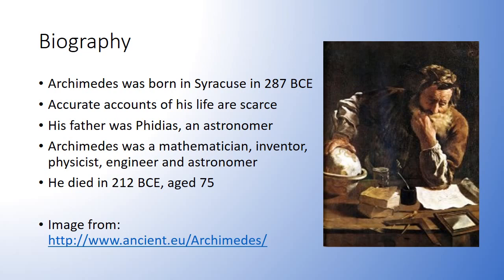Archimedes was born in the city of Syracuse on the island of Sicily in Italy around 287 BC. The details of his life are mixed with legend, as many accounts were written centuries later by historians such as Plutarch. His father was Phidias, who was believed to have been an astronomer and mathematician. Archimedes himself was a renowned mathematician, inventor, physicist, engineer, and astronomer. He died in 212 BC at the age of 75.